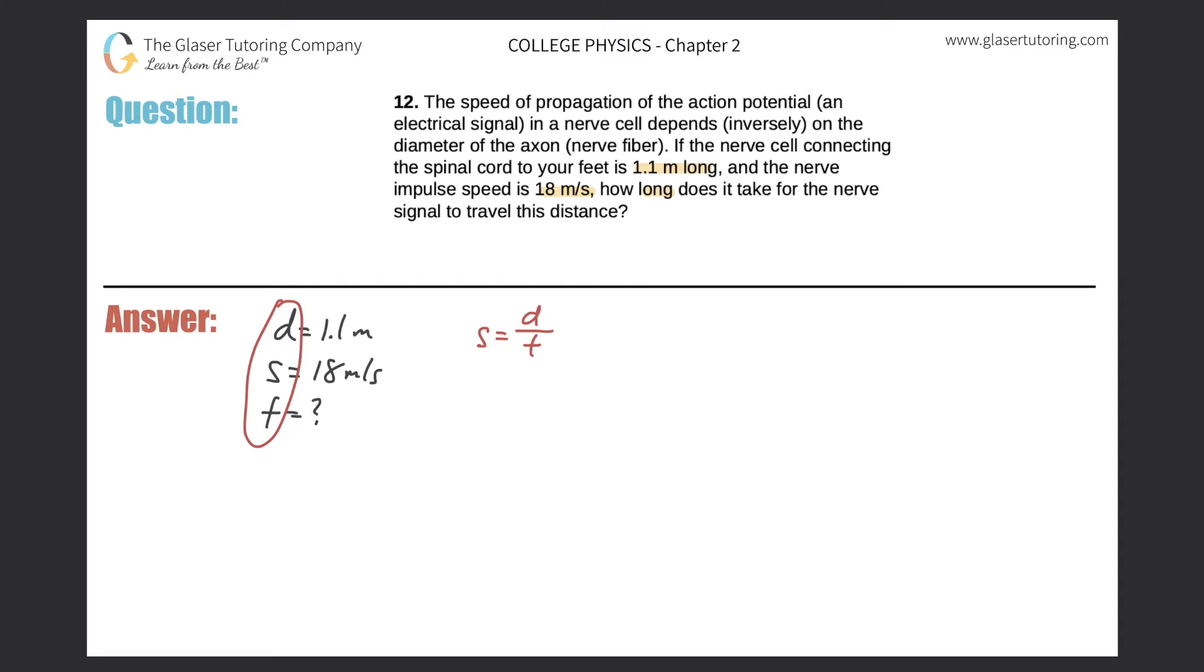So speed will be the distance value of 1.1 meters divided by the time value of... excuse me, we're solving for time, and we don't know that. That's what—see, this is what happens when you move too quickly. We don't know the time, but we do know the speed. It's right here, so that is 18 meters per second. Okay, great. So I know two of the three variables, which means I can solve for the third.